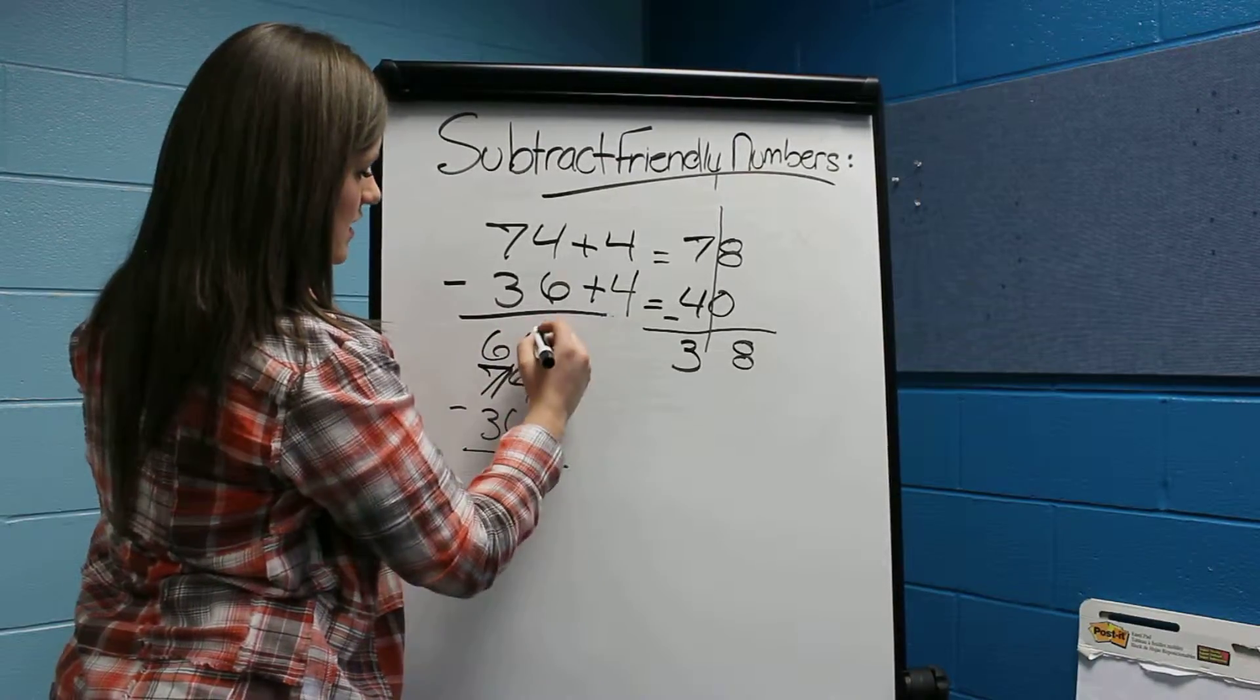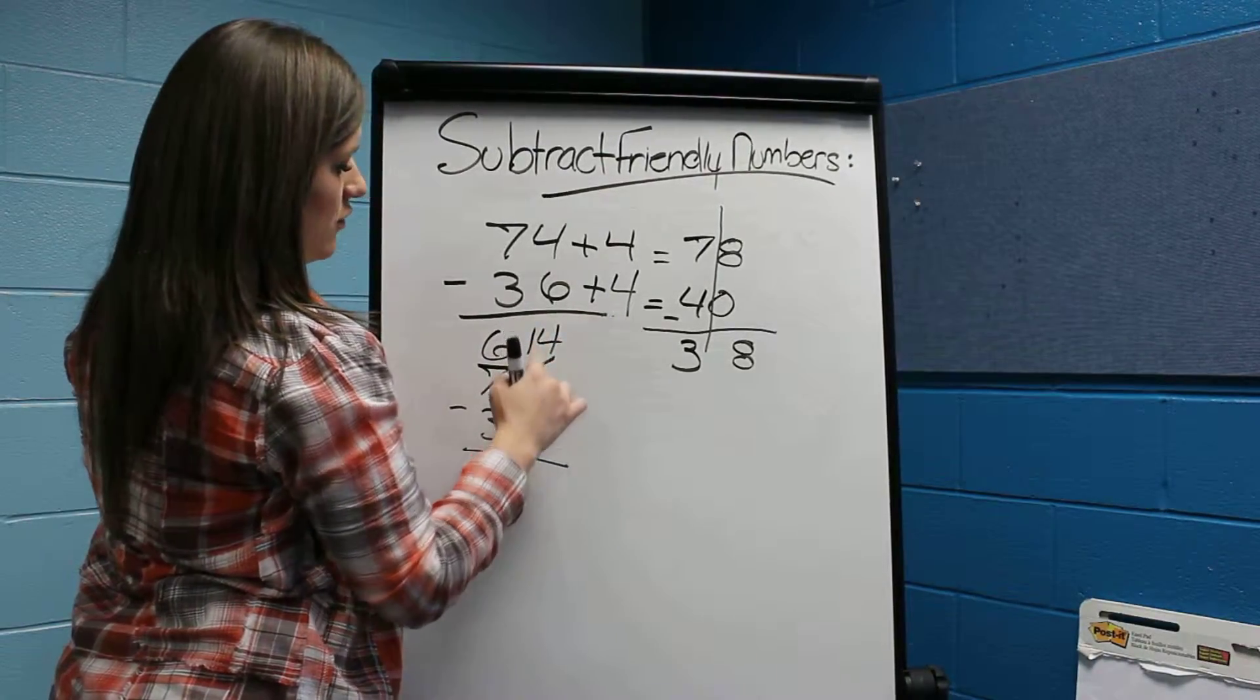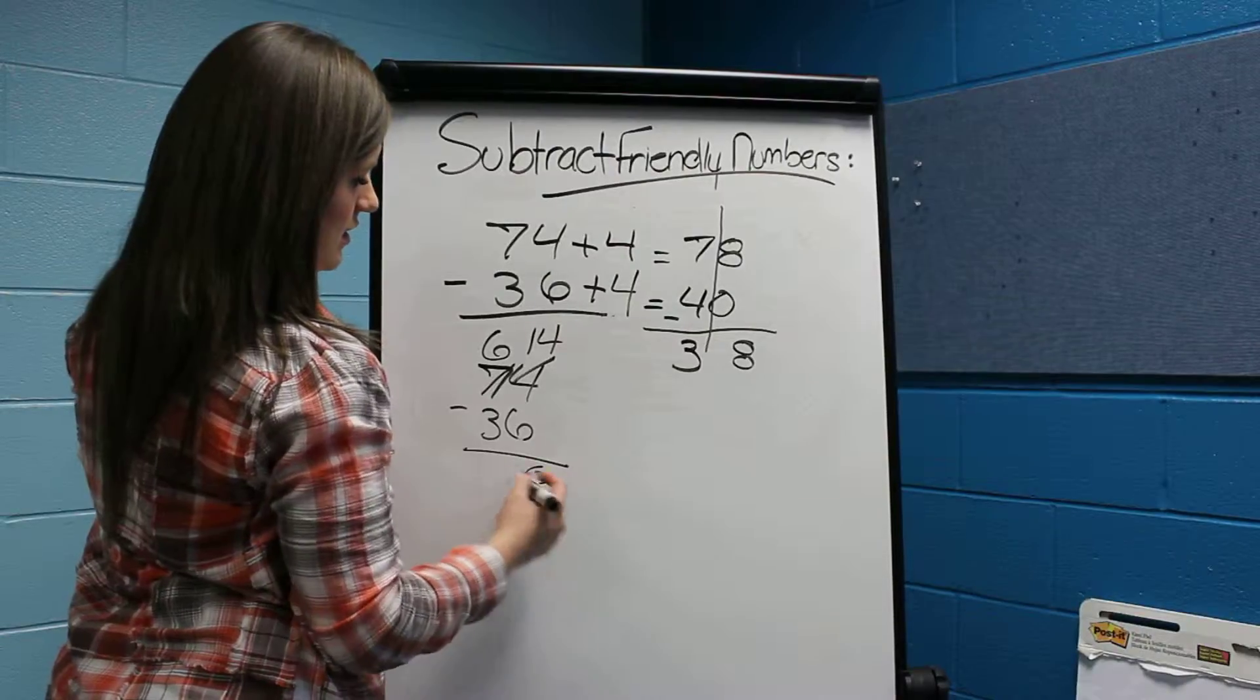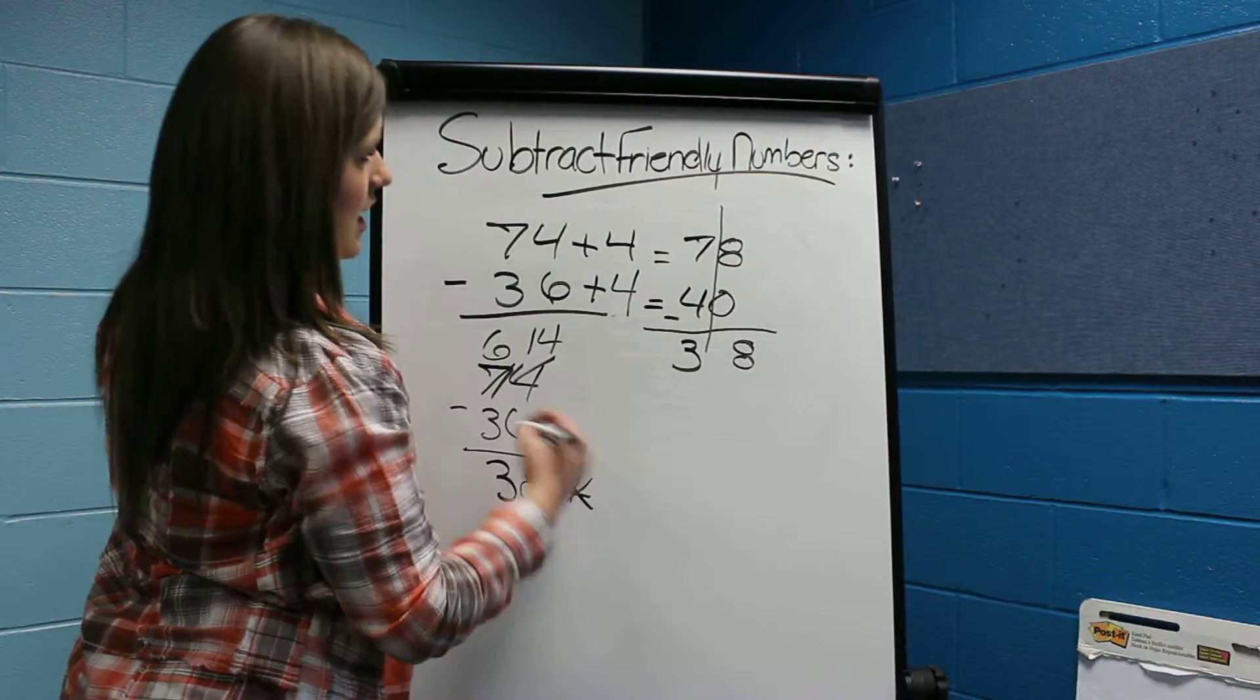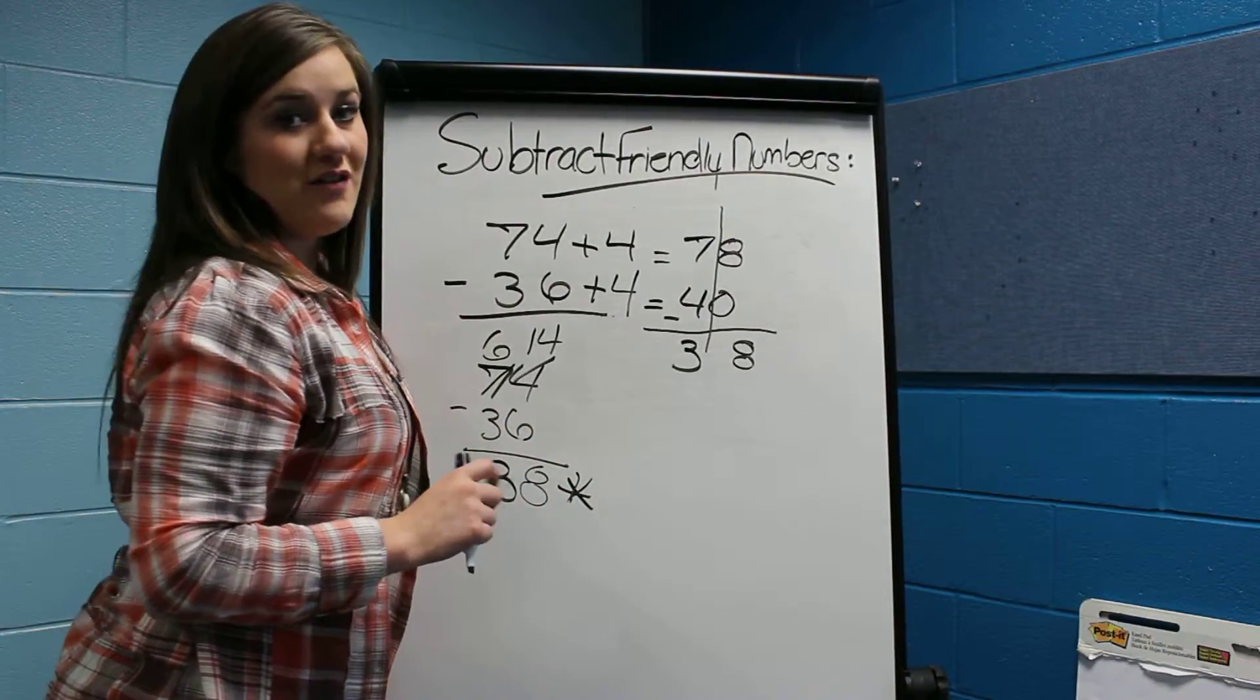Cross that out, cross out that. 4 becomes 14. 14 minus 6 is 8, 6 minus 3 is 3. And that is how you subtract friendly numbers.